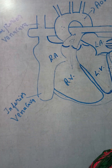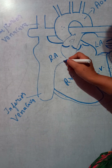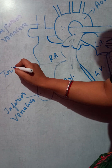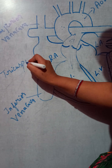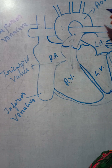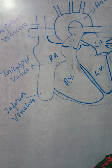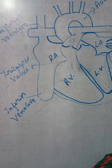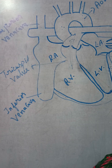Now let's look at the structure of the tricuspid valve. Here is the tricuspid valve — it has three flaps which are of unequal size. When these flaps open, the blood moves from the right atrium to the right ventricle.